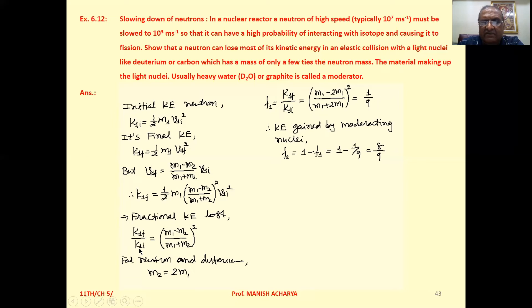Taking K₁ᵢ to the left hand side, we can write K₁f/K₁ᵢ. The fractional loss of kinetic energy is equal to [(M₁ - M₂)/(M₁ + M₂)]².